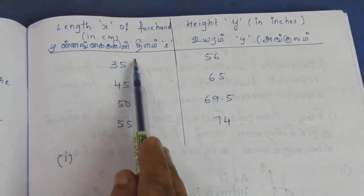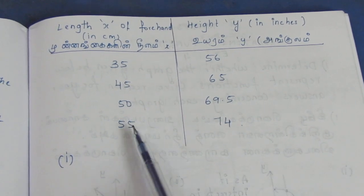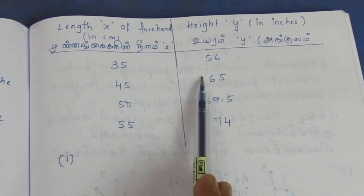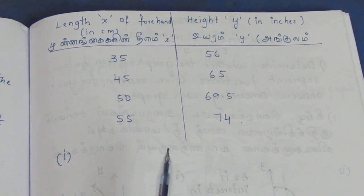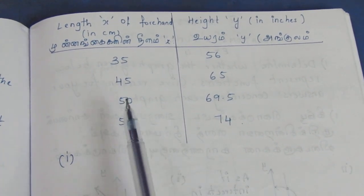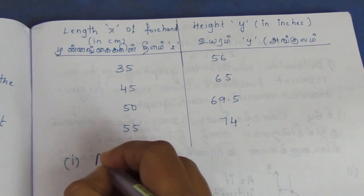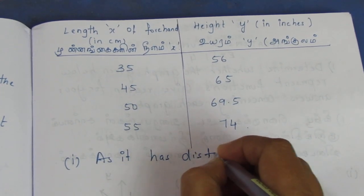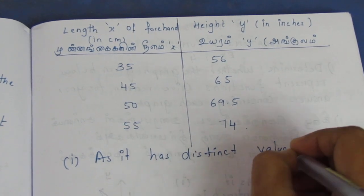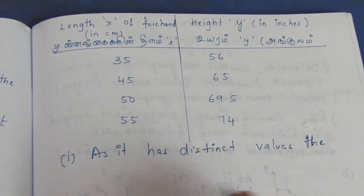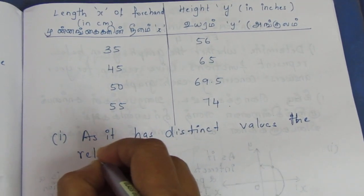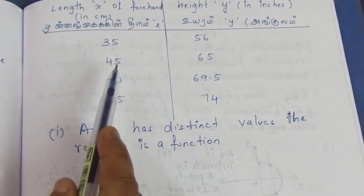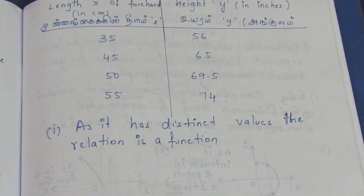If you write a domain or codomain, you can write the elements. One number maps to one number — this is a 1-to-1 function. As it has distinct values, it is a relational function. The relation is a function. This is confirmed to be a function.